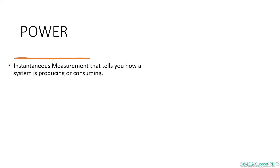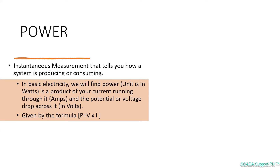When we speak of power on a PV system, we are very specific to electrical power, as it is the instantaneous measurement that tells you how a system is producing or consuming. In basic electricity, we find power units in watts, as a product of your current in amps and the potential or voltage drop across it in volts. It is given by the formula P equals V times I.